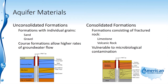Coarse formations allow higher rates of groundwater flow. For example, gravel will allow more water to flow through it than a fine sand will. In consolidated formations, we're talking about rock formations such as limestone or volcanic rock, and the well is drilled into that and the water flows through fractures in the rock.